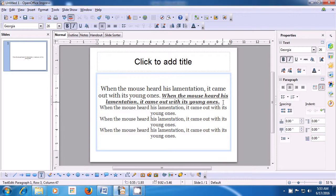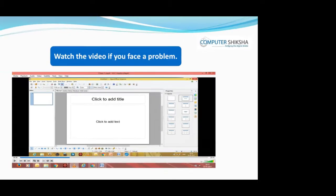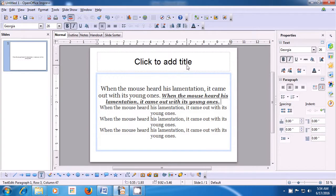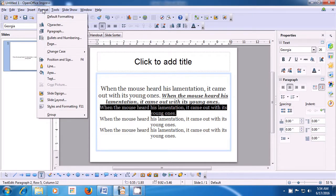Next, change the color of the third line. Watch the video if you face a problem. Let us now see how we can change the font color. To change the color of the font, first select the line where you want to apply the font color. After selecting, bring your pointer to the Format menu of the menu bar and left-click on it.